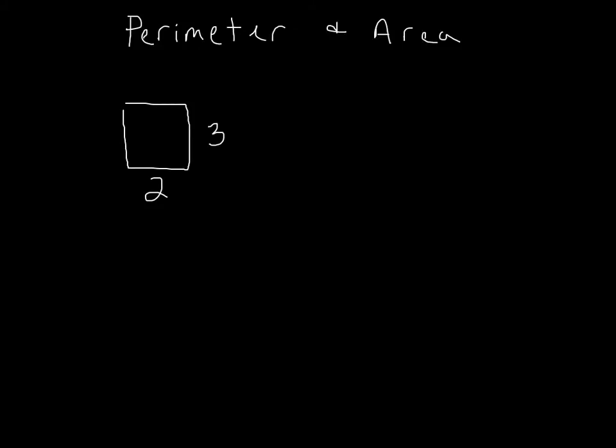All right, so in this video, we're going to start talking about perimeter and area. If you remember correctly, back when you had geometry in other classes, to find perimeter, all you do is add up all the sides. And to find area, you take the base and multiply it times the height when you're talking about a rectangle.